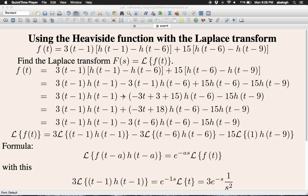It's actually easier to write a plus first in front of it and then combine all the terms together. We have minus 3t, then we have plus 3, and then we have plus 15. After adding together 3 and 15, we get minus 3t plus 18 for the multiplier of h of t minus 6.